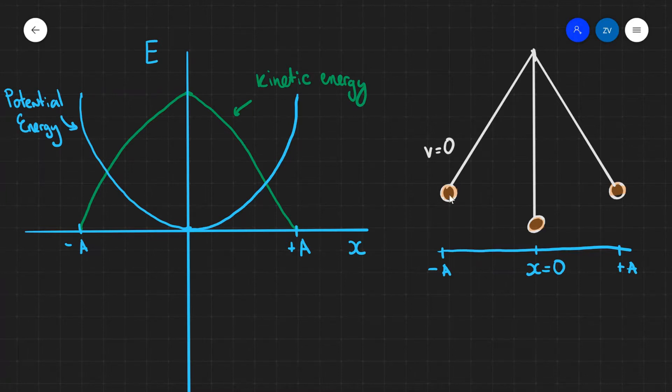At x equals zero, when it goes through the origin, the speed will be at a maximum. And then when it reaches the amplitude once again on the other side, the speed will also be equal to zero.